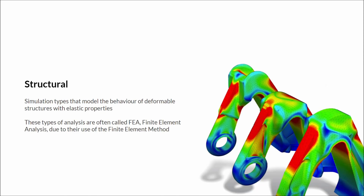The second category of our simulation types are the structural analysis modules. These modules are designed to simulate the deformable behaviour of structures. Where the previous flow modules were generally under the umbrella of CFD, or computational fluid dynamics, these simulations are often called FEA, or finite element analysis, due to their use of the finite element method.